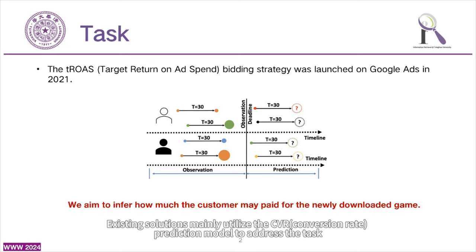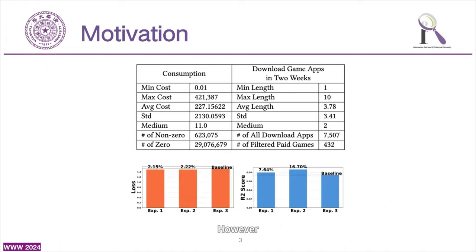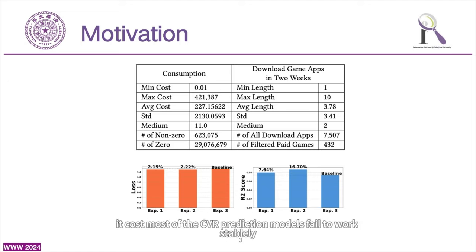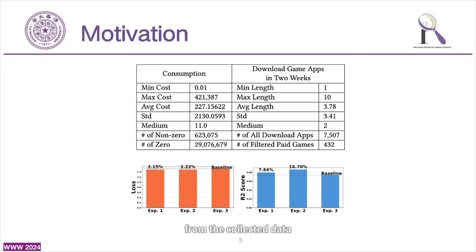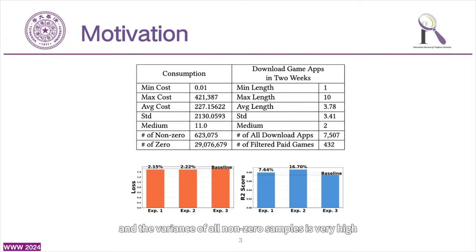Existing solutions mainly utilize the CVR, conversion rate, prediction model to address the task. However, because the customer's consumption behavior is hard to predict, most CVR prediction models fail to work stably. For example, from the collected data in the table, we found most consumption values are zero, and the variance of all non-zero samples is very high.